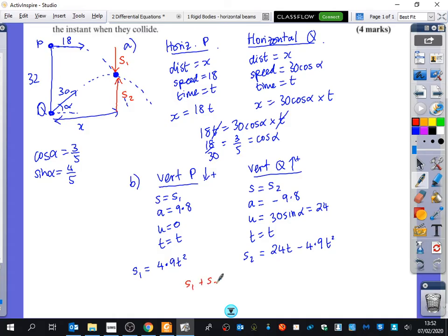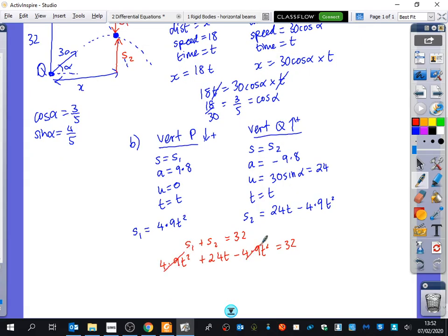We know from this diagram, those two distances is 32. So S1 plus S2 is 32, which means 4.9 T squared from S1, plus 24 T minus 4.9 T squared from S2, is equal to 32. Very generously, these cancel, and so we get T is 32 over 24, which simplifies to 4 over 3, or 1.3 seconds to two significant figures.